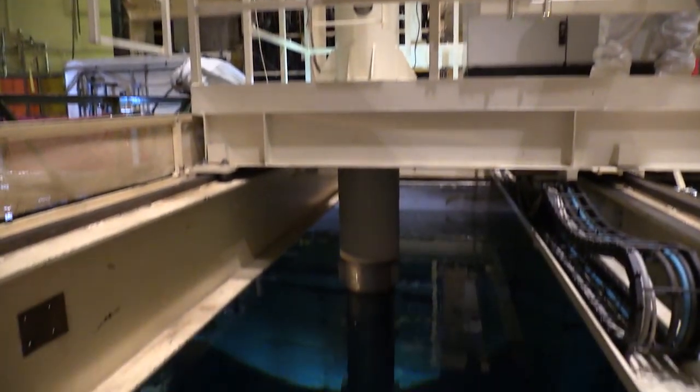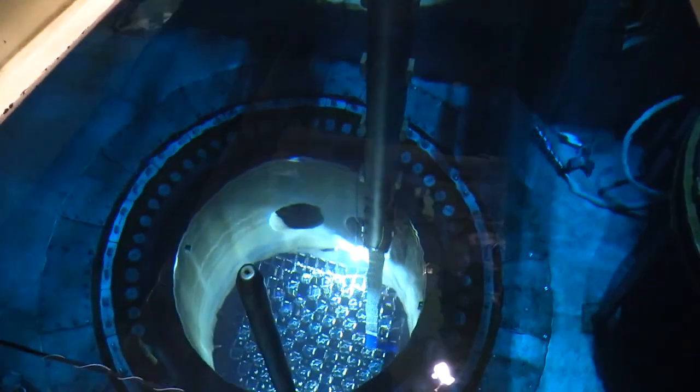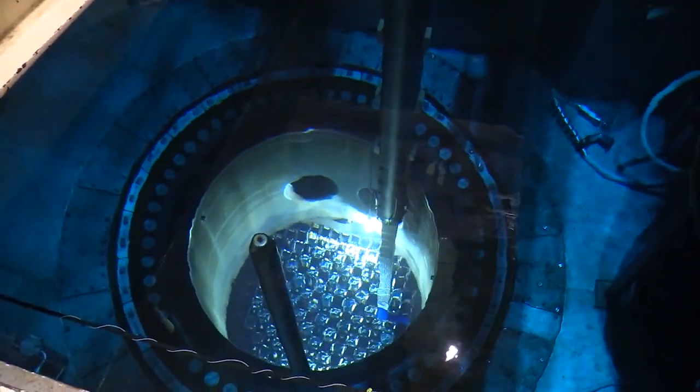Refueling the reactor is the main objective of the outage. In the reactor core, small uranium dioxide pellets are arranged in 12-foot-long tubes called fuel rods.